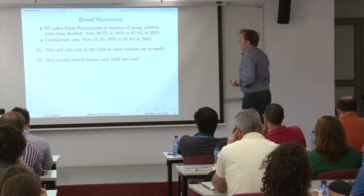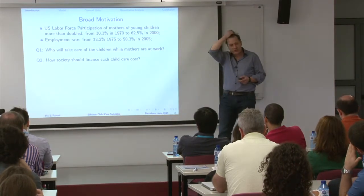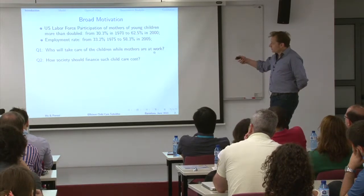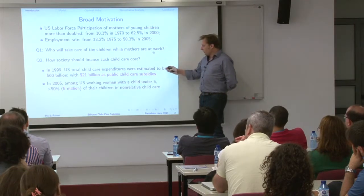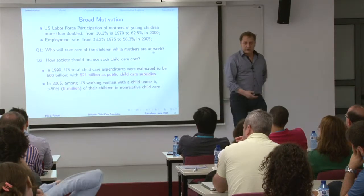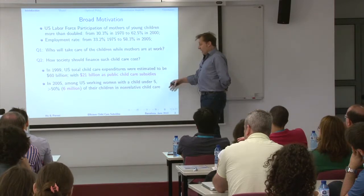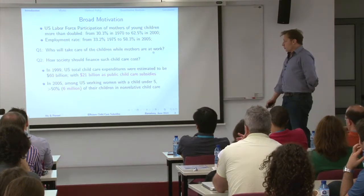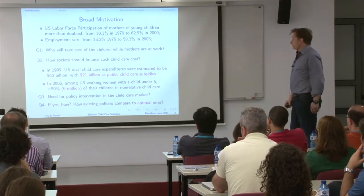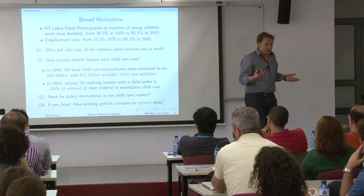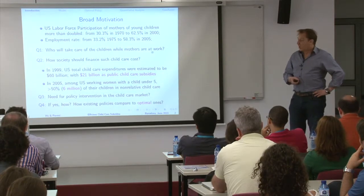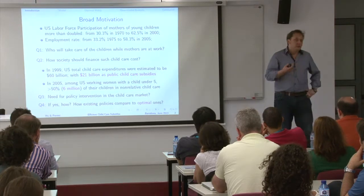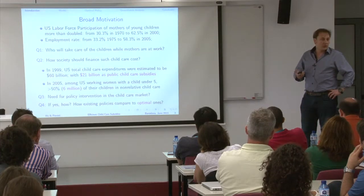The broad motivation involves big numbers: there is a huge increase in labor force participation among mothers, especially those with young children. There are not only large costs for childcare but also large public expenditure — around 21 million in the US — and more than 50% of children are in non-relative childcare. The key questions are whether there should be policy intervention, what shape it should take, and how these compare to existing ones.